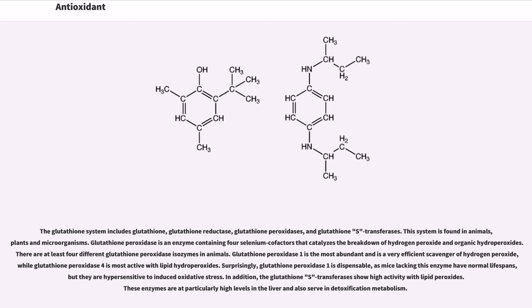Surprisingly, glutathione peroxidase 1 is dispensable, as mice lacking this enzyme have normal lifespans, but they are hypersensitive to induced oxidative stress. In addition, the glutathione S-transferases show high activity with lipid peroxides. These enzymes are at particularly high levels in the liver and also serve in detoxification metabolism.